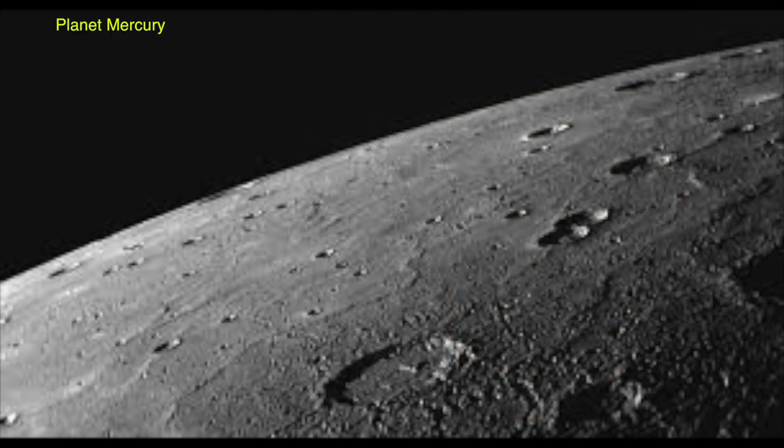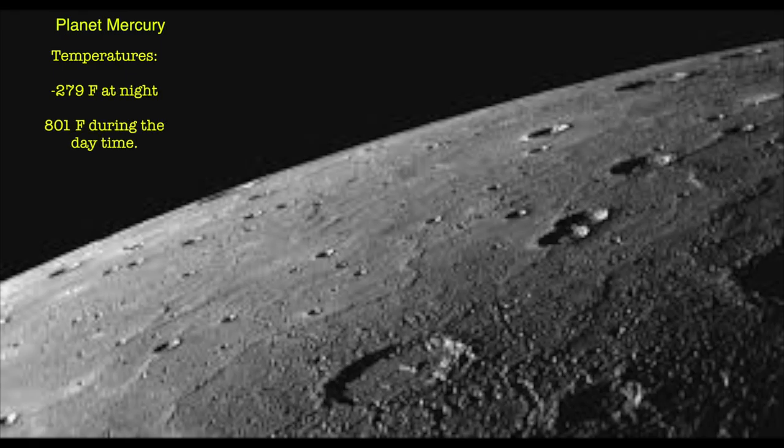Planet Mercury temperatures: minus 279 degrees Fahrenheit at night, and 801 degrees Fahrenheit during the daytime.